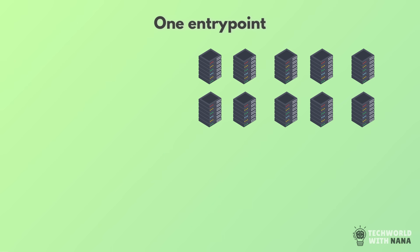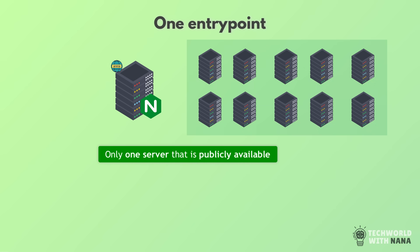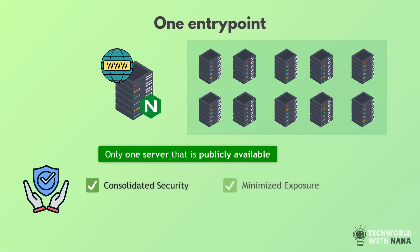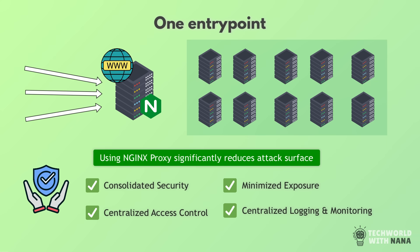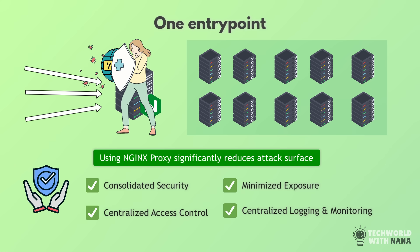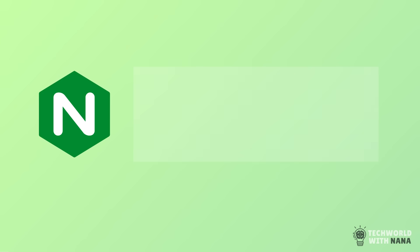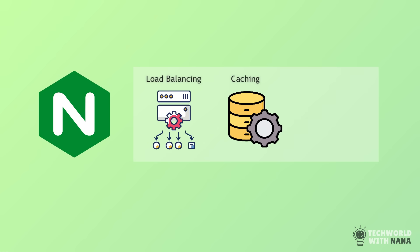Instead, we just give them one server that is the only one publicly accessible. You can put all your tightest security efforts on one server instead of 100 servers. Having one entry point — the proxy — as the publicly accessible entry point reduces the security attack surface tremendously and basically acts like a shield or security layer before all those web servers. So in addition to load balancing and caching, a very important functionality of a proxy is added security for your web servers.